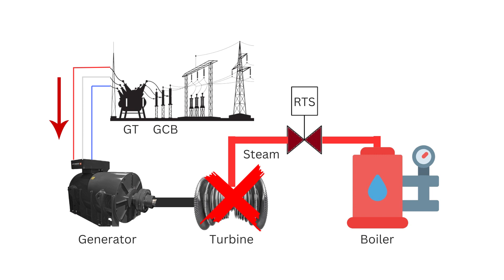For instance, the governor, which regulates the speed and load of the turbine, may malfunction. Alternatively, there might be a failure in the governor valve, which controls the steam supply to the turbine, or an issue in the boiler pressure control system, which ensures a steady supply of steam. These failures lead to a loss of driving force, causing the generator to switch to motoring mode and draw power from the grid.